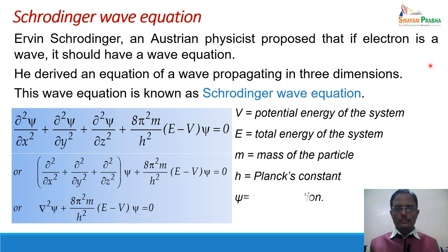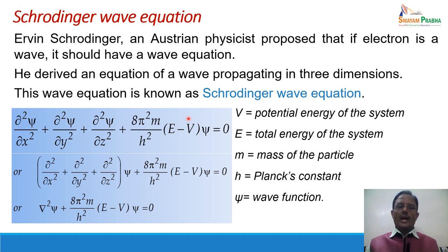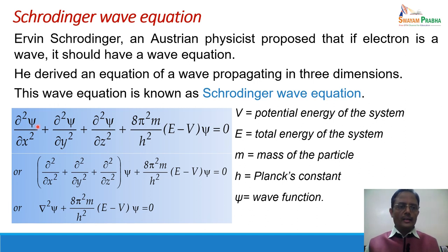In this equation, V is the potential energy of the system, E is the total energy, m is the mass of the particle, h is Planck's constant, and ψ is the wave function. The equation contains particle properties: mass and (E − V), where E − V is the kinetic energy. So it relates mass and kinetic energy of the particle to the wave function ψ. For one-dimensional space, the equation simplifies to ∂²ψ/∂x² + (8π²m/h²)(E − V)ψ = 0 along the x direction.